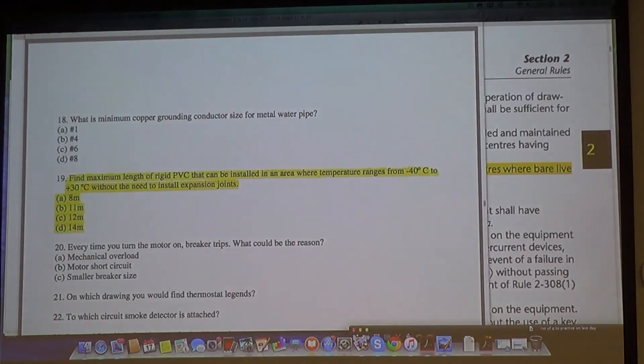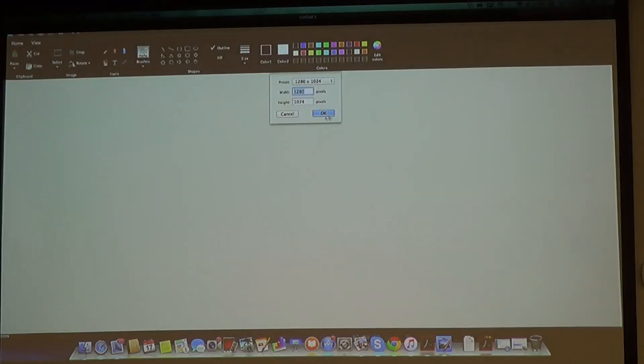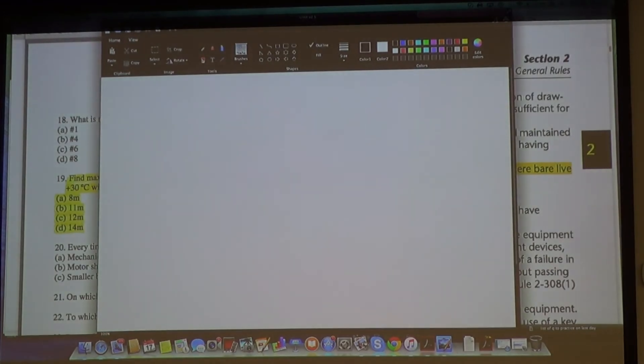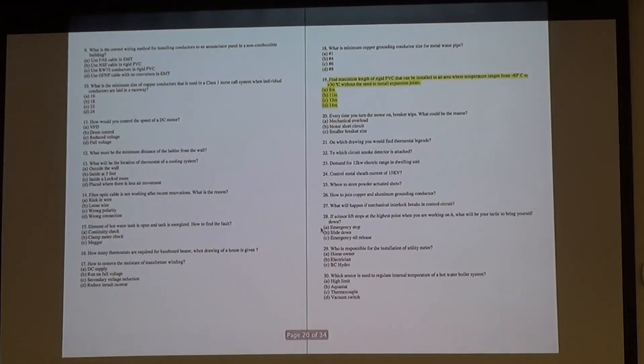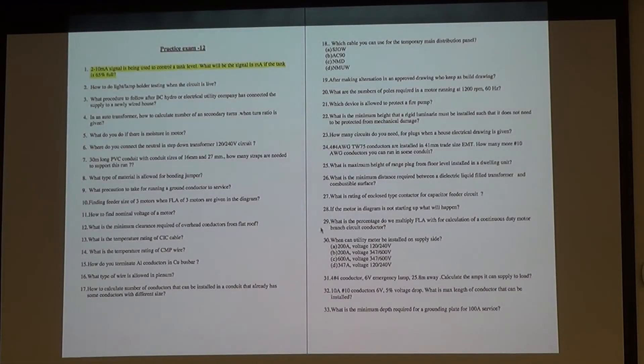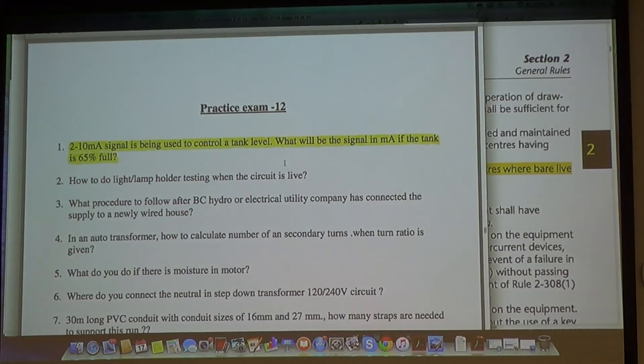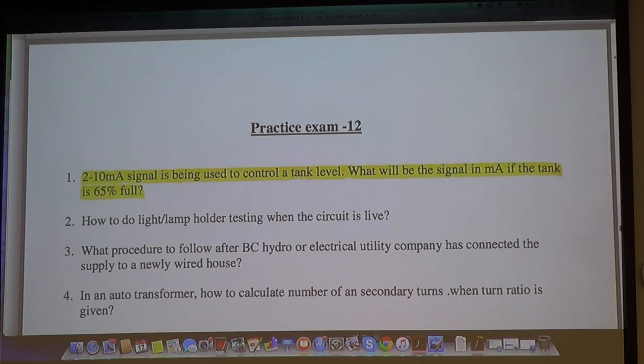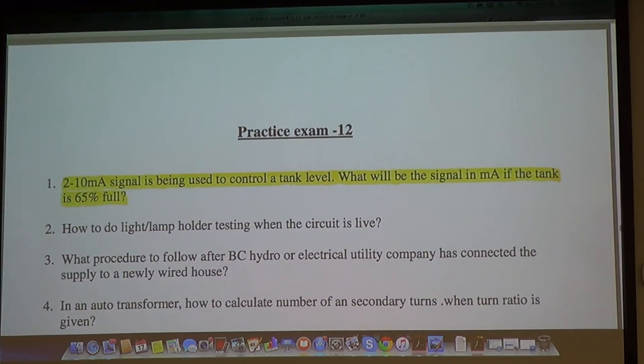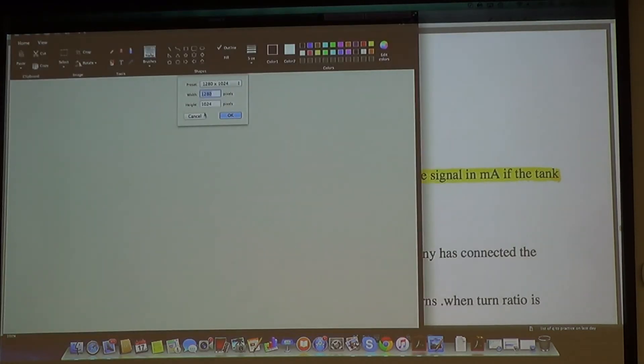Should we go forward guys? What's the next number? Dan, you're going to help me with the next question here. What's after 19? Number 1, exam 12. Exam 12 number 1. Let's just open it on the screen as well. 2 milliamps to 10 milliamps signal is being used to control a tank level. What will be the milliamp signal if the tank is only 65% full? Again guys, ratio proportion question. Why do I think I'm doing so many of them on the board? Because I know that in the exam this will be harder for you to do on your own. So practice is important. That's why we are practicing in the class.